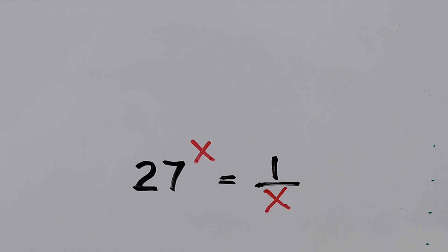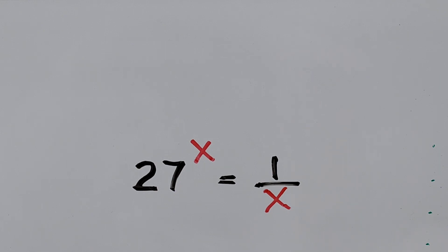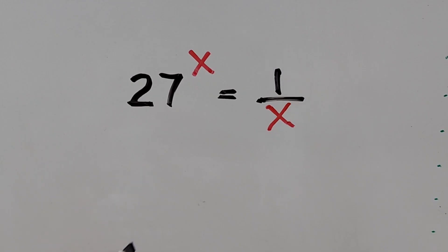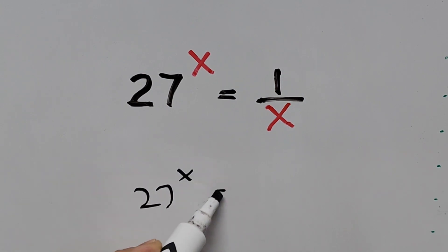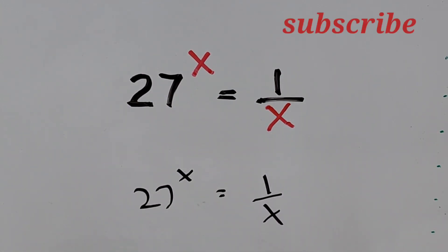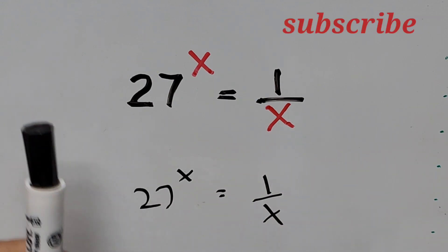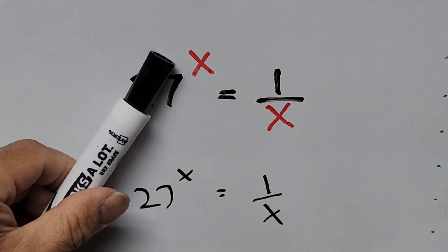Would it be taking the logarithm of both sides of the equation, or something else — like getting rid of the exponent of this variable x on the left-hand side? Let's do it this way. 27 to the power of x equals 1 divided by x, so the right-hand side is 1 over x and the exponent on the left-hand side is x.